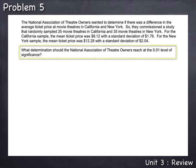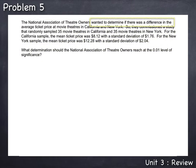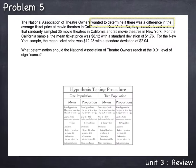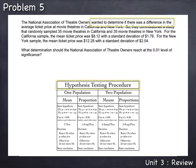To answer this question — what determination should the National Association of Theater Owners reach — we look to the problem to see what they were trying to determine. The problem stated they wanted to determine if there was a difference in the average ticket price. Since the answer is either yes, there is a difference, or no, there's not a difference, we will conduct a hypothesis test procedure. In a hypothesis test procedure, we let the data decide whether the H0 or the H1 idea is valid.